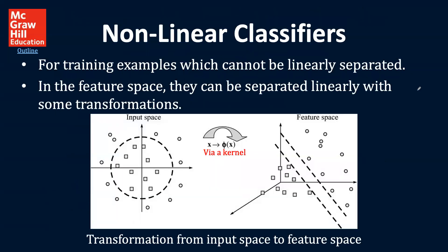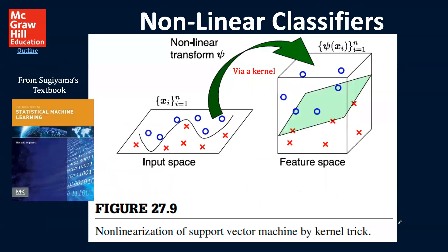Now let's talk about nonlinear classifiers, and this picture will give you an idea of what that might look like. For training examples which cannot be linearly separated, we can look at a feature space that can be separated linearly with some type of transformation. One possible way of doing that is using something called a kernel. By taking the data here we're able to have the input space transformed over to a feature space, and now we get the margin that we would like to have. So using some form of transformation is a strategy we could be using.